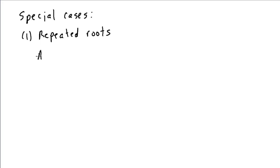So, if we run into a term of the form lambda minus lambda m to the r, this would yield solutions, actually, of the form a1 e to the lambda m t and a2 t e to the lambda m t.